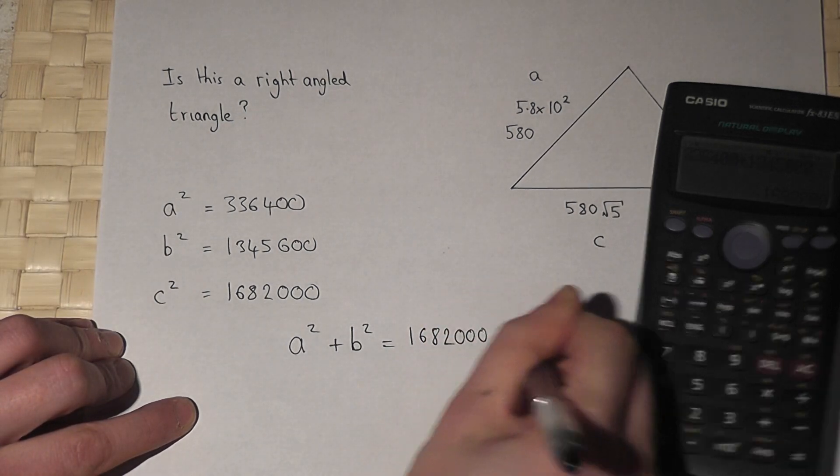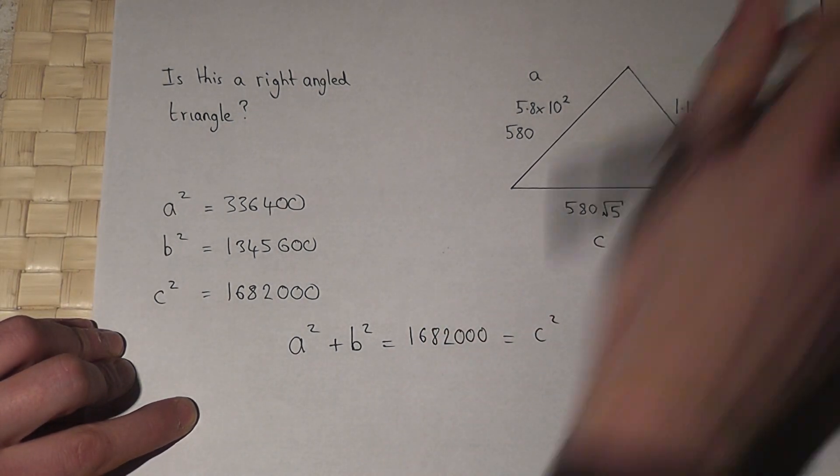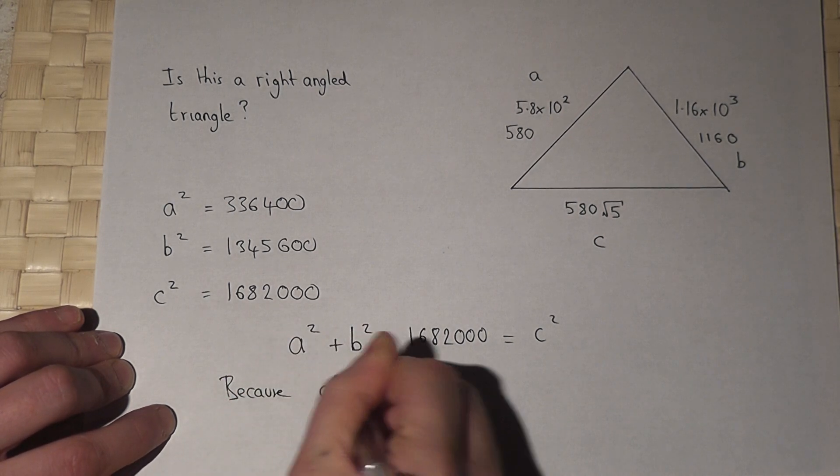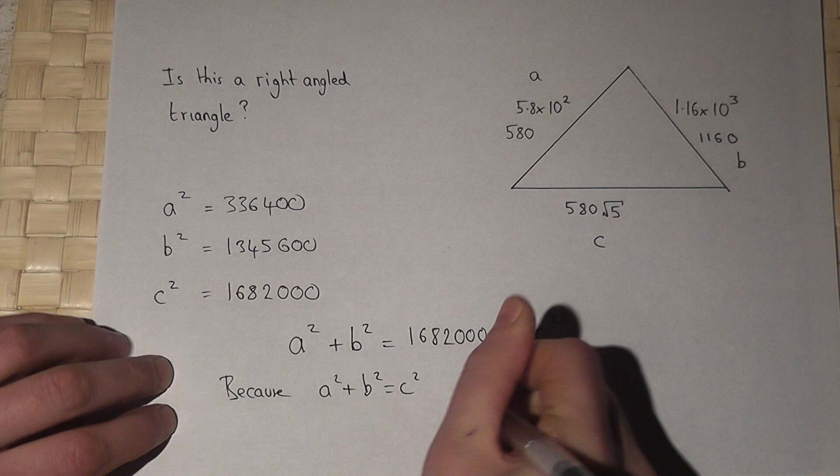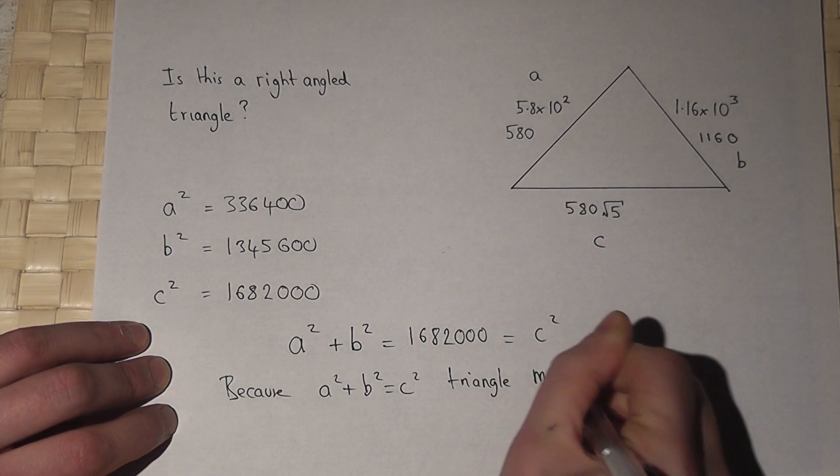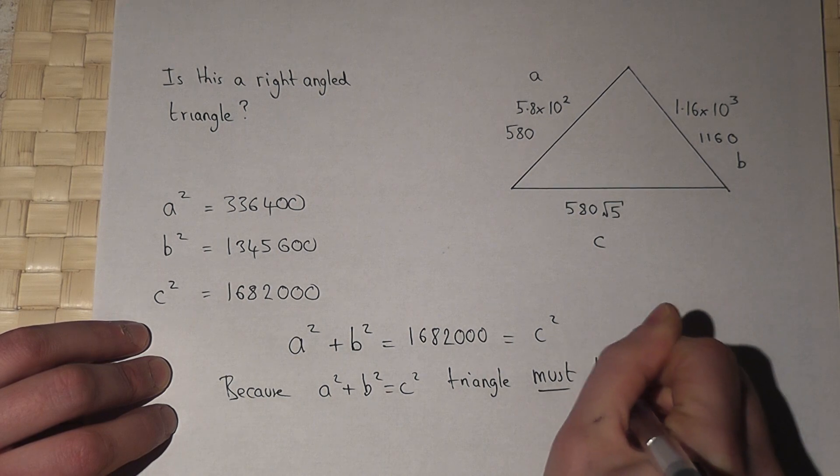which equals c squared. So, because a squared plus b squared equals c squared, the triangle must be right-angled.